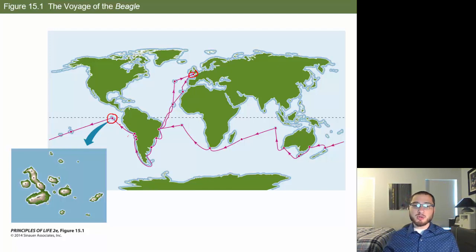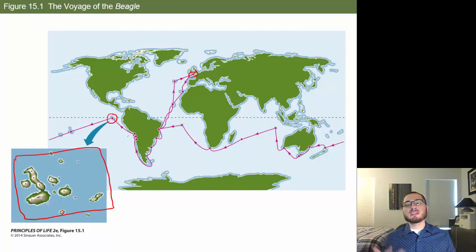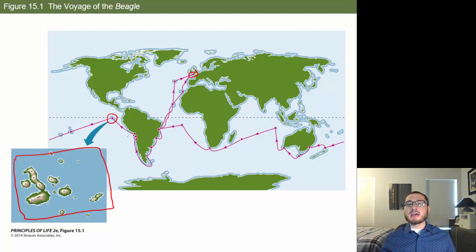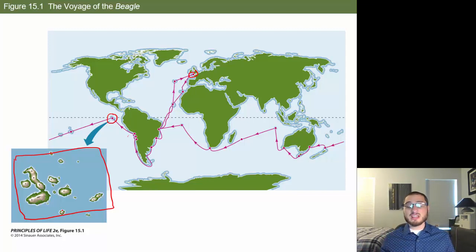Eventually they landed on the Galapagos Islands, an archipelago off the coast of South America. Darwin noticed that the organisms there were very different from those he encountered elsewhere. Everywhere else, animals were afraid of humans because they'd had interaction with them and knew humans would hunt them. But at the Galapagos, these creatures were completely unfamiliar with humans and had no fear.